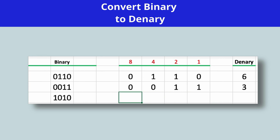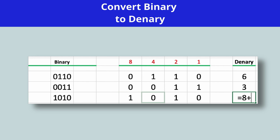Let's do the same thing again — I'd like you to pause the video and give it a go to convert 1010 from binary to denary. We're going to put each bit in each column. This time I want an eight. There's a zero in the fours column so I'm not going to do anything. There's a one in the twos column so I'll add the two. And then there's a zero in the ones column so I won't do anything. So binary 1010 is the same as denary 10.